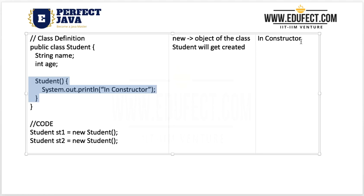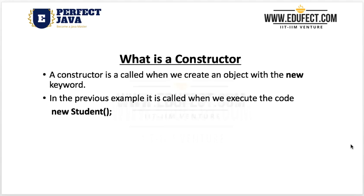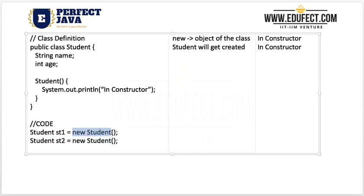Next, when we do 'student st2 = new Student()', we are again creating a new object of the class Student. The constructor will get called again, and 'in constructor' will be printed again. So a constructor is called when we create an object with the 'new' keyword — as we saw with both 'new Student()' calls.